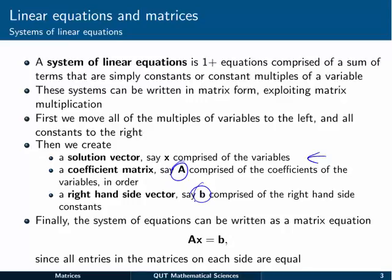Once we've done that, the system of equations can actually be written in matrix form. The equation becomes matrix A times vector x is equal to vector b. All entries in the matrices on each side will be equal to each other.